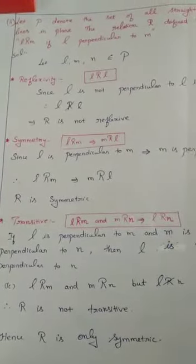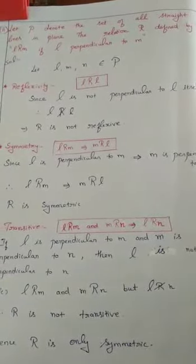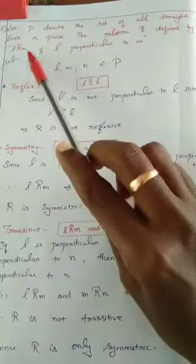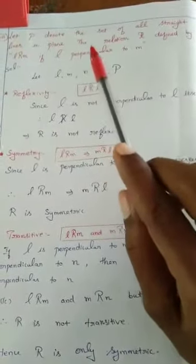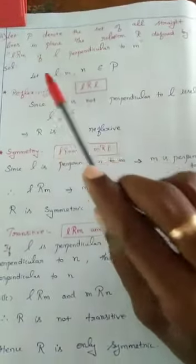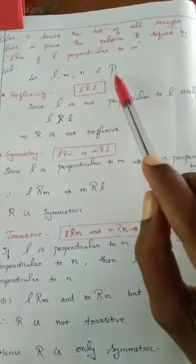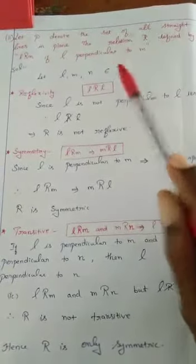Therefore R is reflexive, not symmetric, and transitive. Second subdivision: let P denote the set of all straight lines in a plane. The relation R is defined by L is related to M if L is perpendicular to M. Whenever two lines are perpendicular, L is related to M. We take three elements from the set P.